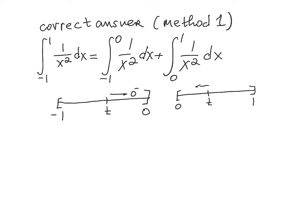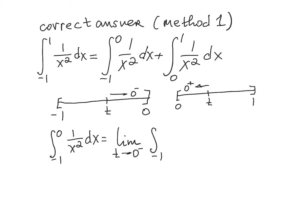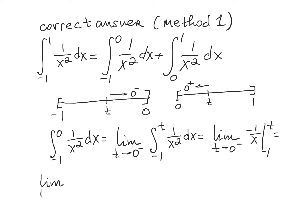As t approaches 0 from the left, that defines the first improper integral as a limit. For the second interval from 0 to 1, let t be a number between 0 and 1; as t moves toward 0 from the right, that limit gives the second improper integral. So the integral from minus 1 to 0 of 1 over x squared dx is defined as the limit as t approaches 0 from the left of the integral from negative 1 to t of 1 over x squared dx. Taking the antiderivative gives negative 1 over x evaluated from minus 1 to t.